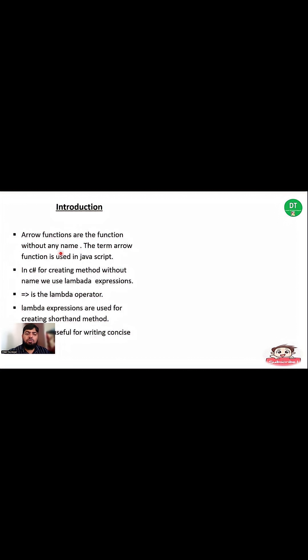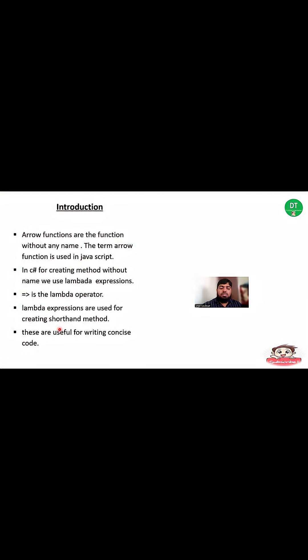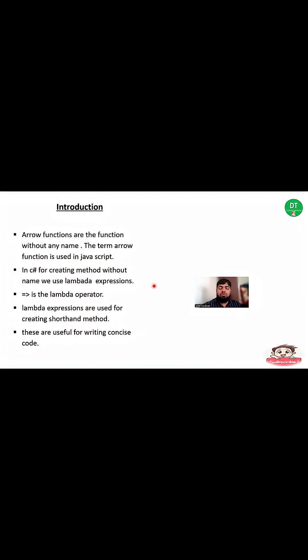Arrow functions are functions without any name. The term arrow function is used in JavaScript. In C# for creating a method without a name, we use lambda expressions. The equal-to-greater-than symbol is the lambda operator. Lambda expressions are used for creating shorthand methods — these are useful for writing concise code. Shorthand method means the method which contains fewer lines of code.